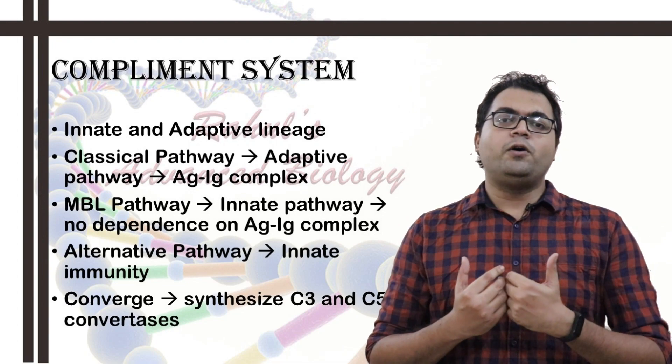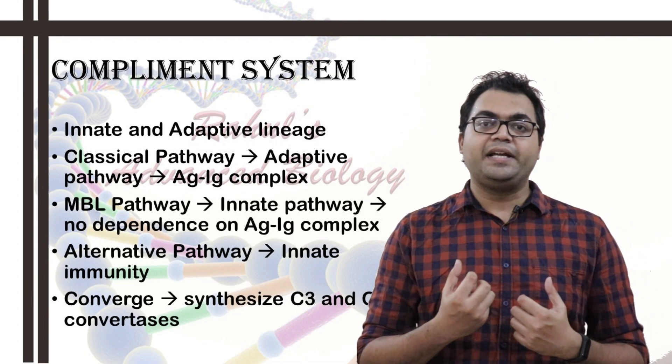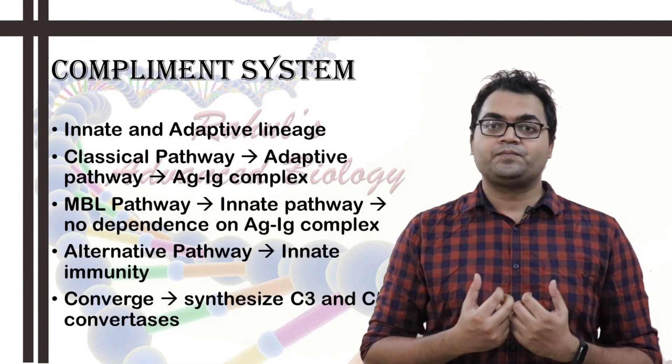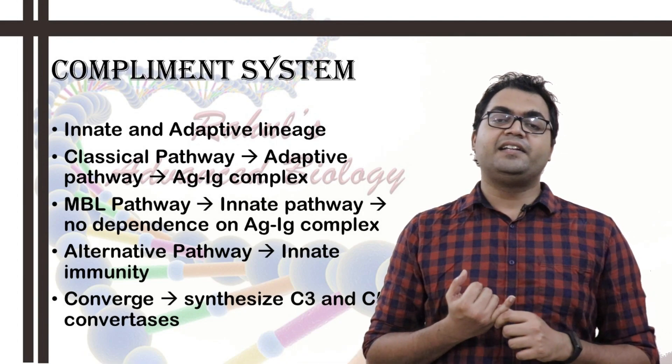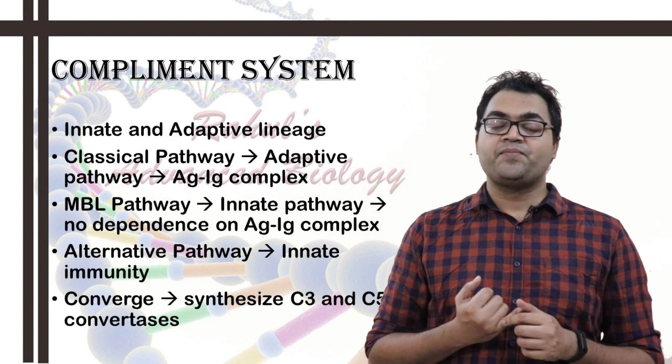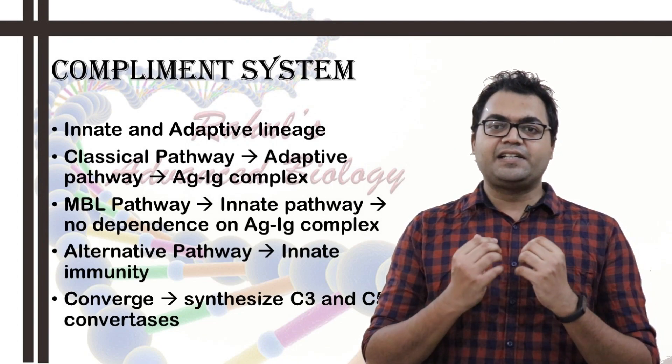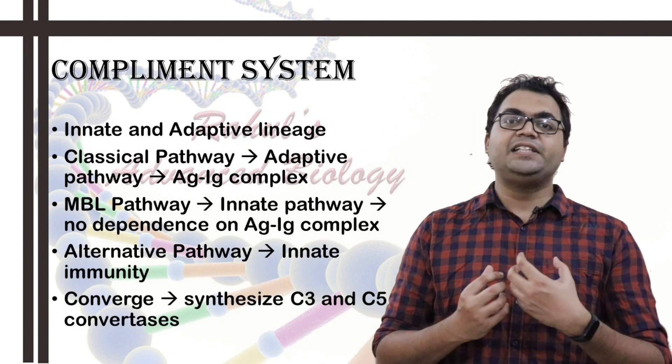So the complement system belongs to both the innate and adaptive immunity. These are specific serum proteins which are produced by the liver. Now there are specifically three major pathways: one is the classical pathway, another is the MBL mannose-binding lectin pathway, and another is the alternative pathway. Now all three pathways converge together to form the C3 convertases or the C5 convertases.